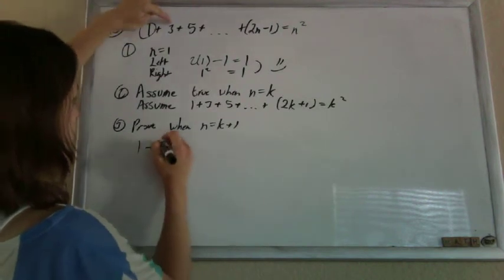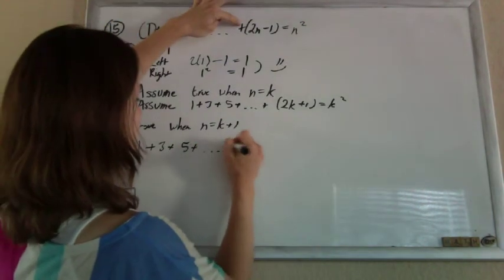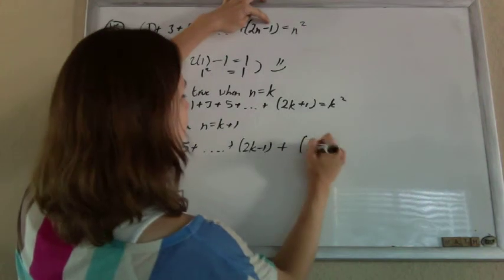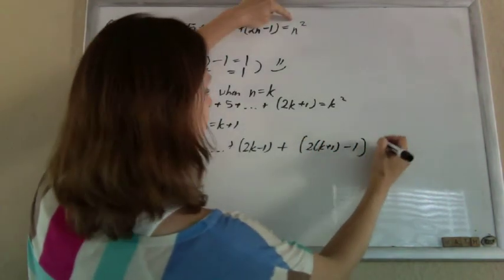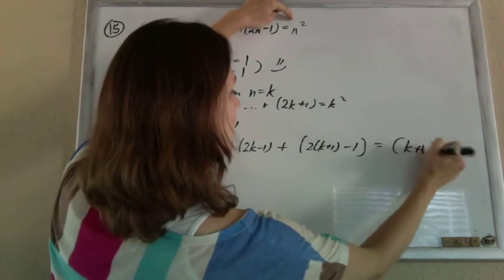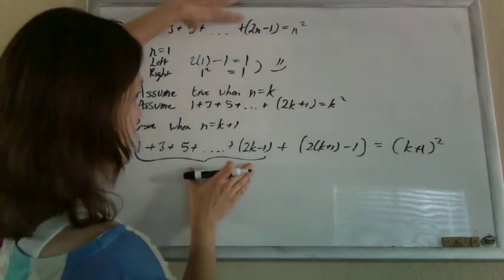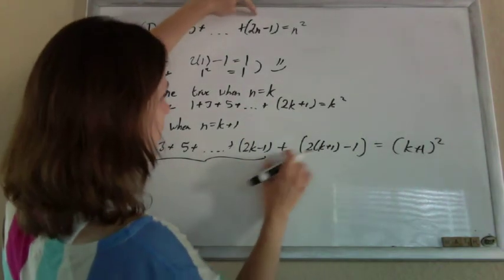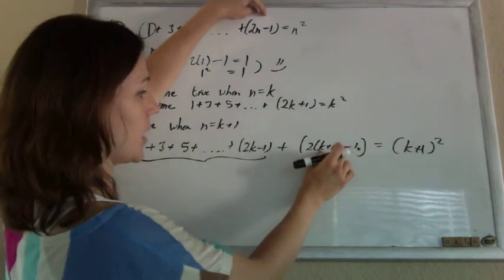So if we want to prove that this is true for the k plus 1 term, we're trying to prove that the first term plus the second term plus the third term plus dot dot dot plus the kth term plus the k plus 1 term equals k plus 1 squared. So all this is getting you up to your kth term, it's just the original part, and then adding the k plus 1 term. That's supposed to equal k plus 1 squared.